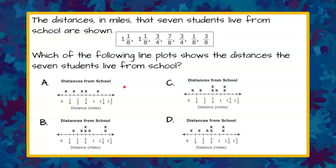Welcome back. So the first thing we want to understand is that we're talking about line plots. We have four line plots to look at here and they're saying that the line plot that is correct is going to represent the distances that seven students live from school. So that means there need to be seven X's or seven pieces of data on each of these line plots. So let's check that first.